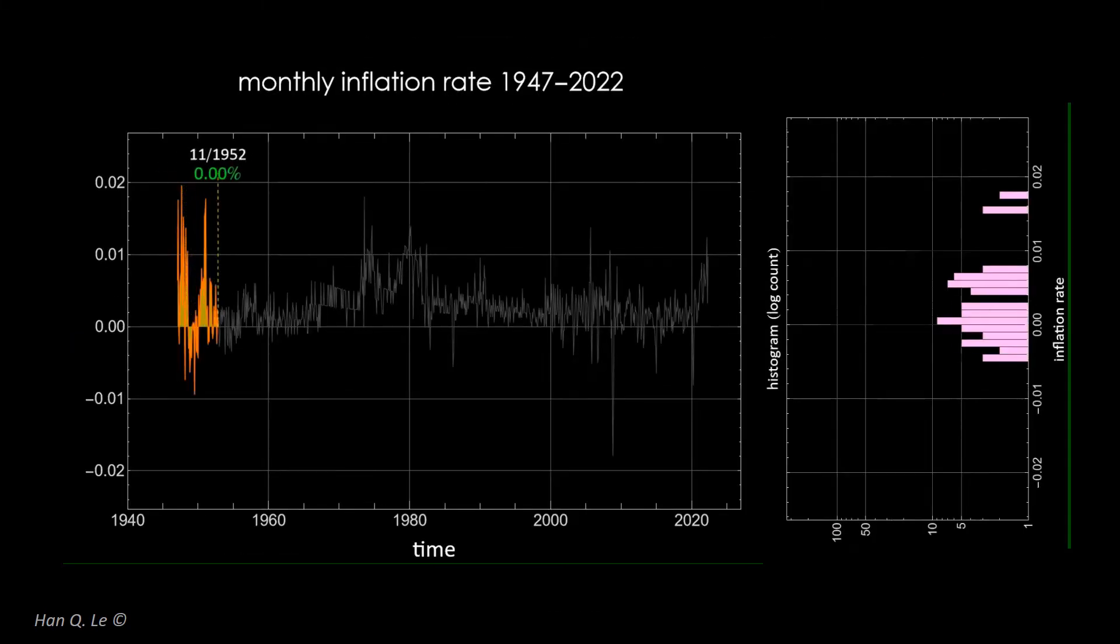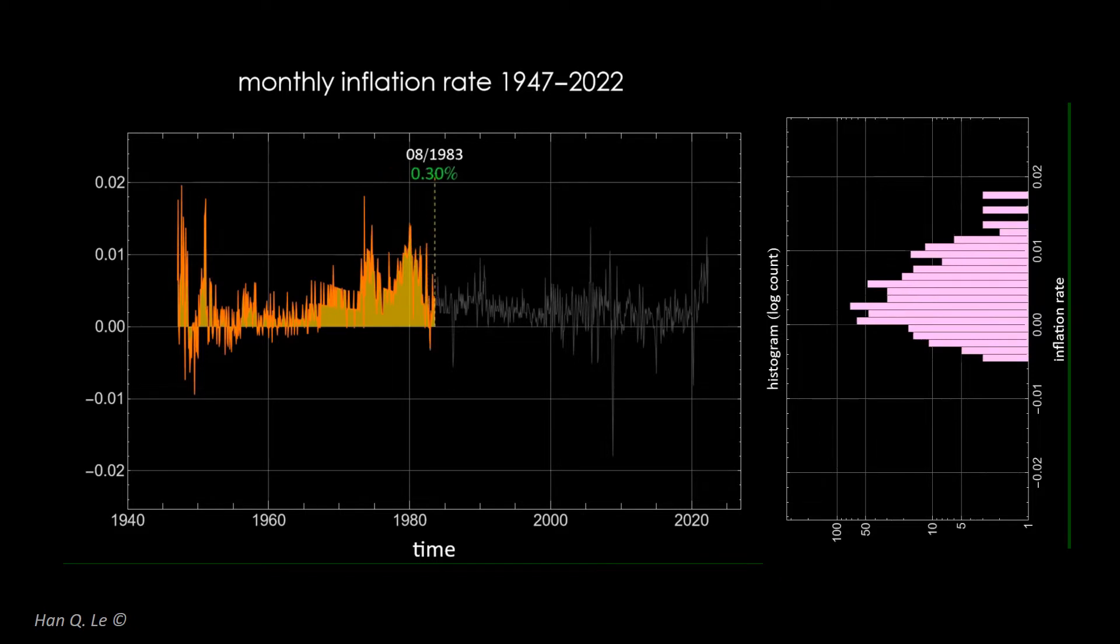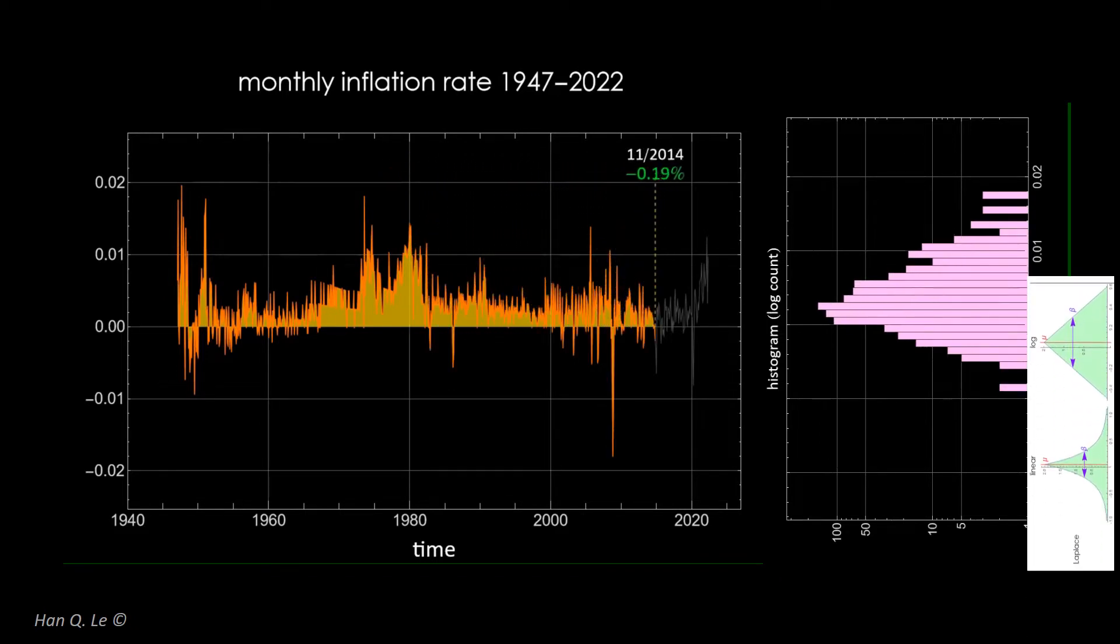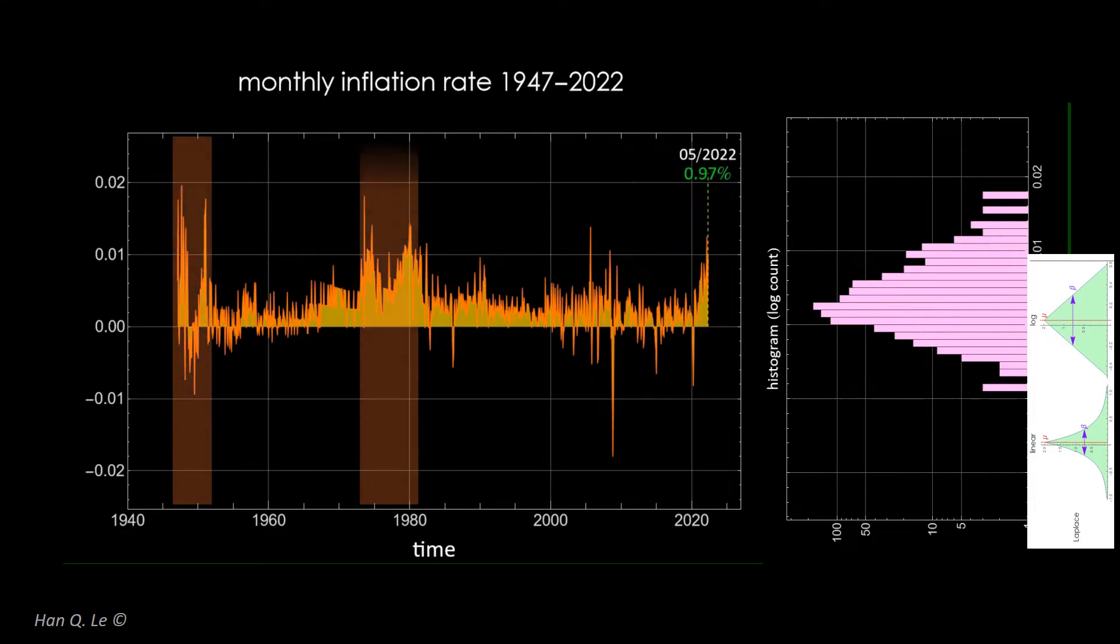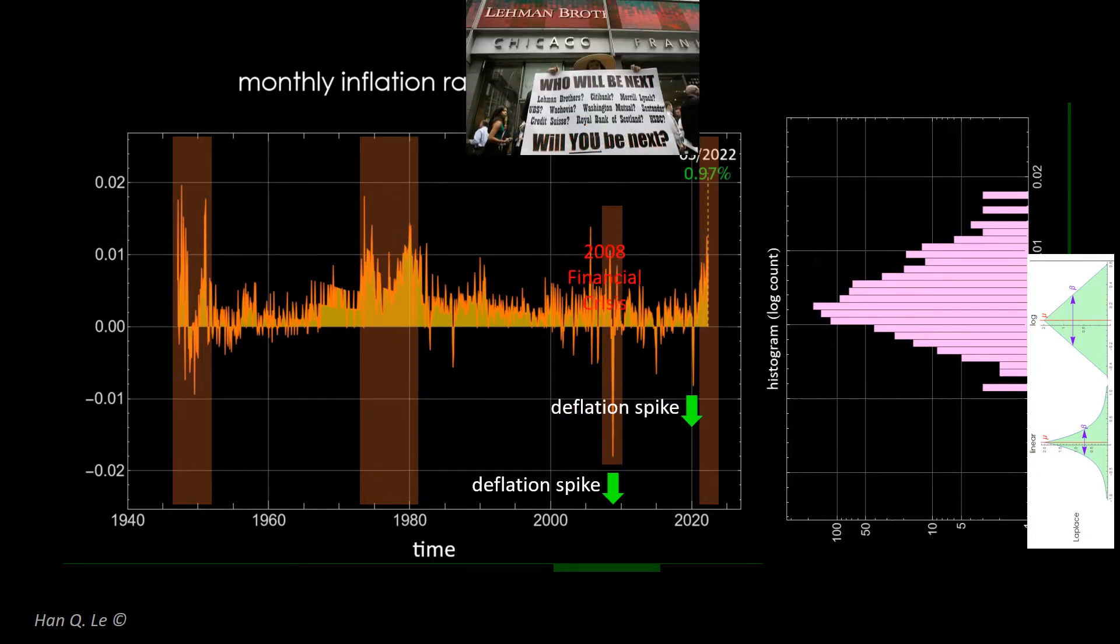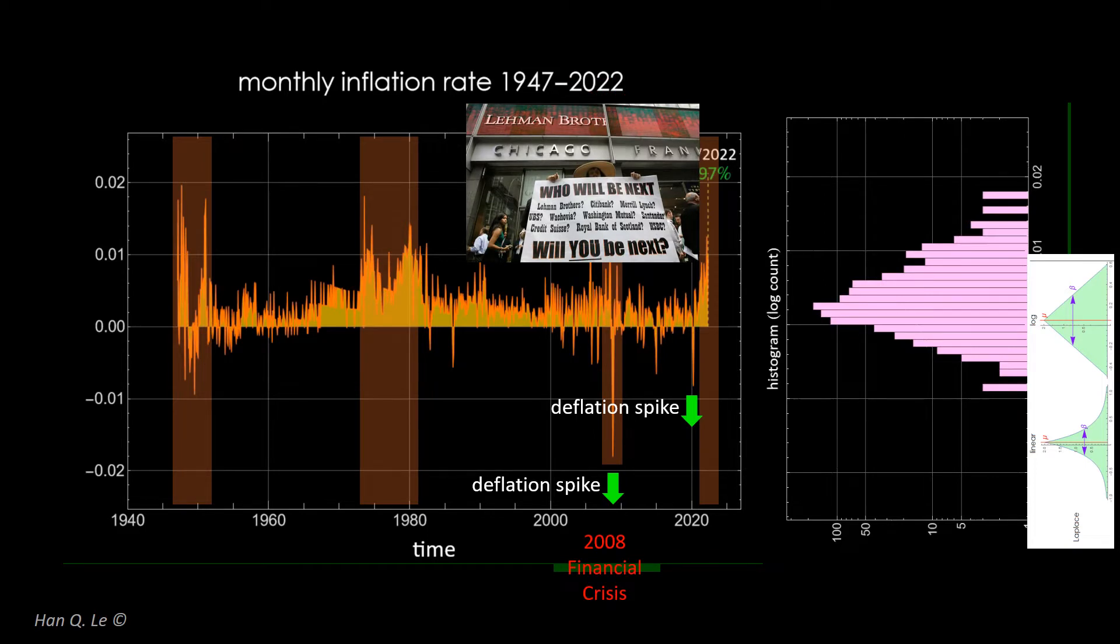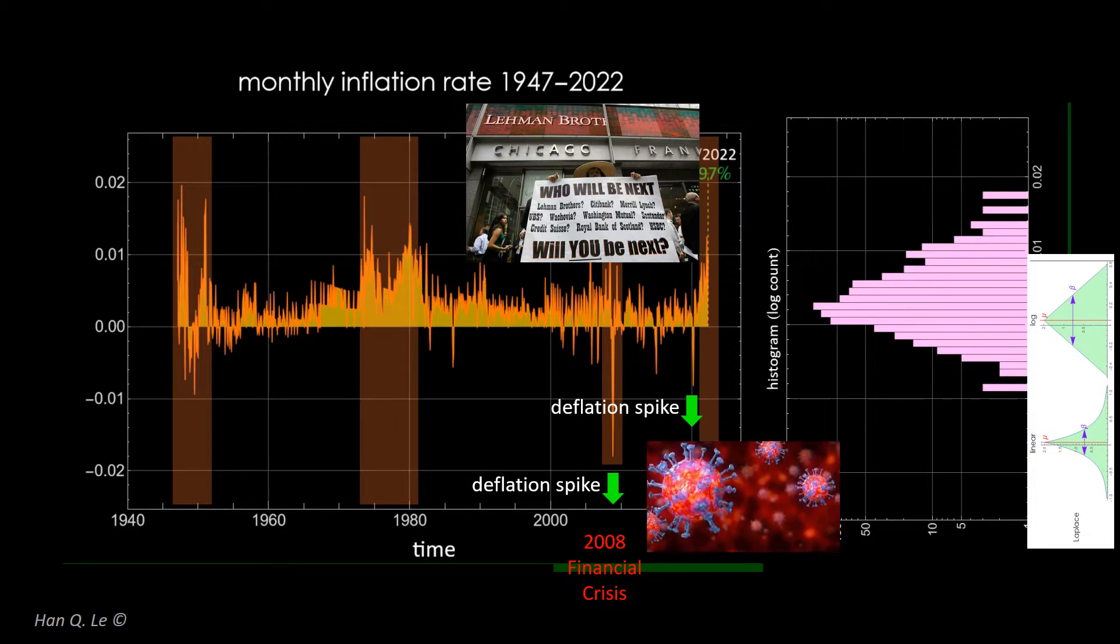The month-to-month CPI change is the inflation rate. Its statistical distribution is the usual and ubiquitous double-sided Laplace distribution. Besides the three high inflation episodes mentioned, there are also short-term occasions of spiky inflation and deflation. The large deflation spike in 2008 was associated with the financial crisis, and the deflation in early 2020 was due to COVID-19 pandemic.